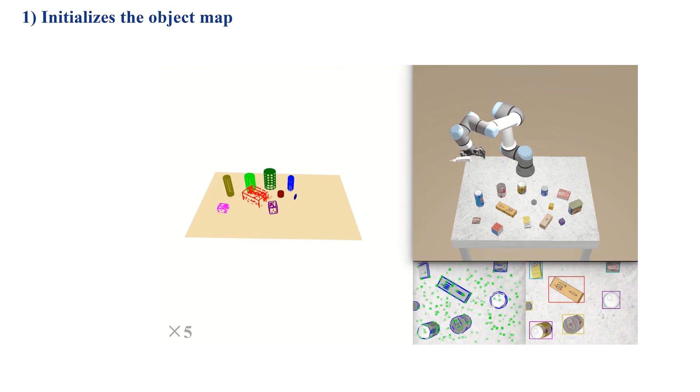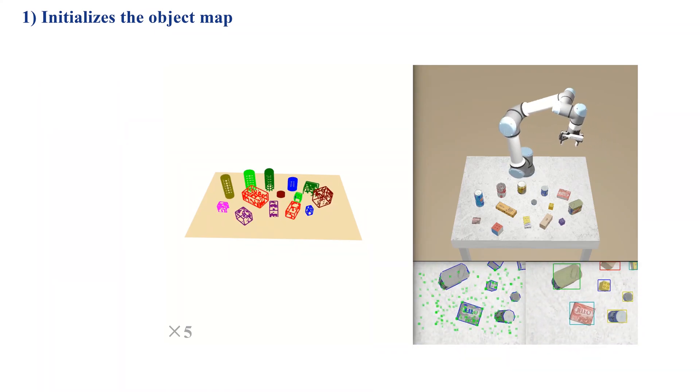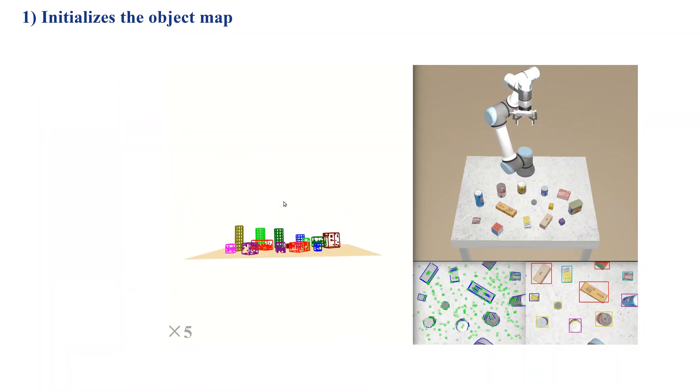First, the robot arm equipped with a RealSense camera scans the table, initializing an object map.